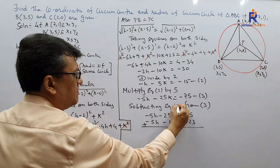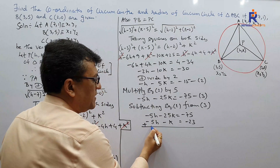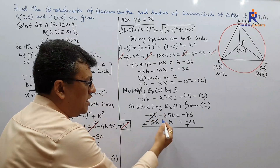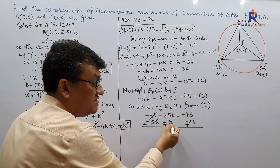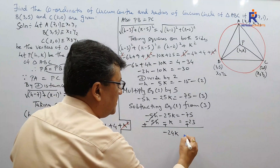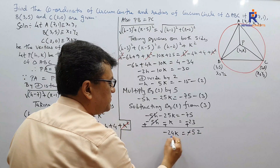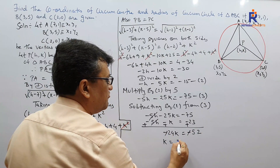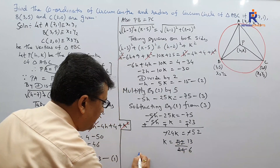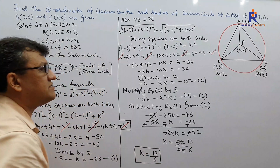Subtracting Equation 1 from Equation 3 and changing signs: −25k − (−k) = −24k, and −75 − (−23) = −52. So −24k = −52, giving k = 52/24 = 13/6. The value of k is 13/6.